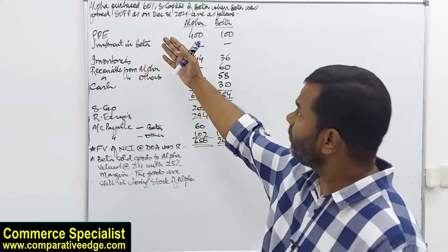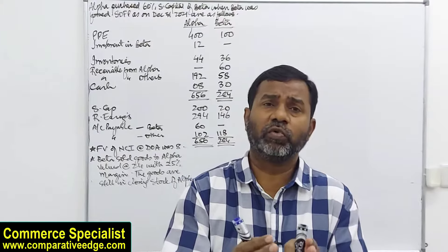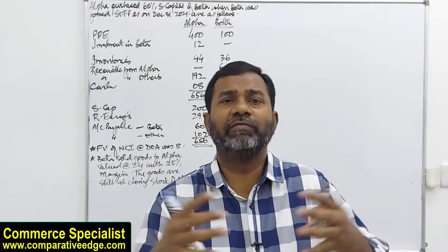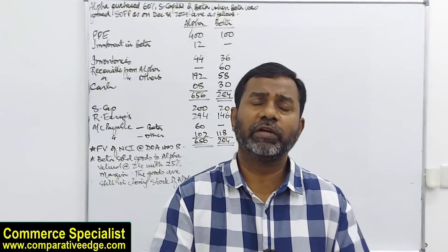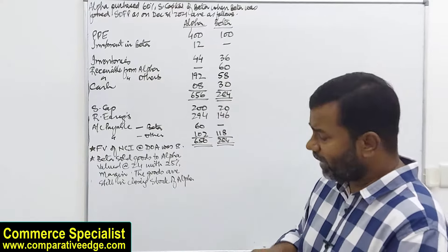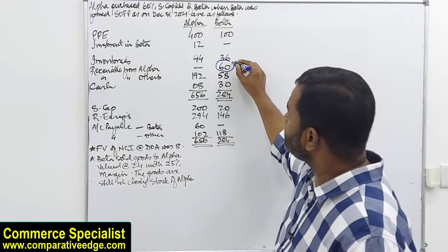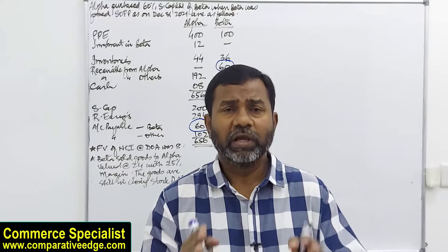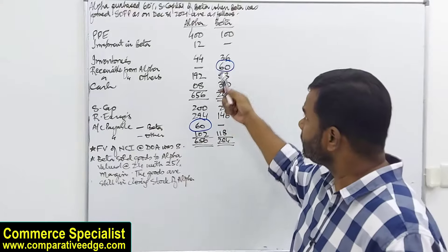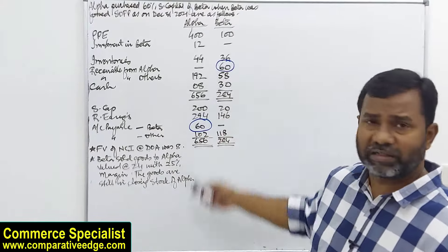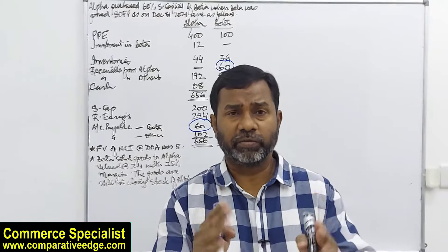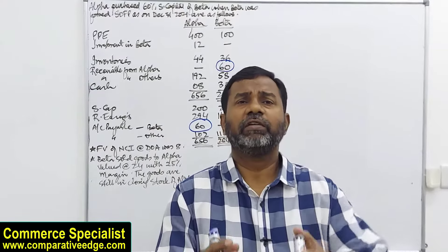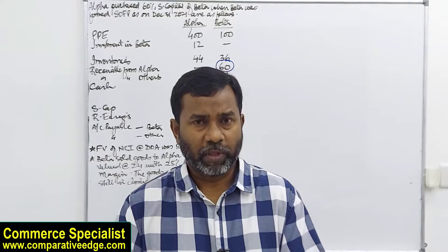Alpha is purchasing 60 percent shares — more than 50 percent — so Alpha is the parent and Beta is the subsidiary. Parent and subsidiary can trade with each other. Beta has receivables from Alpha, and Alpha has payables to Beta. As per IFRS 10, intra-group balances are to be eliminated. This 60,000 that Alpha owes Beta and Beta owes Alpha would be cancelled out and not shown in the consolidated statement of financial position.